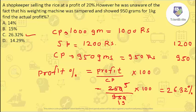What you need to understand is what the actual cost price is. We considered 1000 grams for 1000 rupees, so the actual cost price is for 950 grams only, which is 950 rupees. The selling price is 1200 rupees because of the 20% profit, and we get the answer as 26.32%.